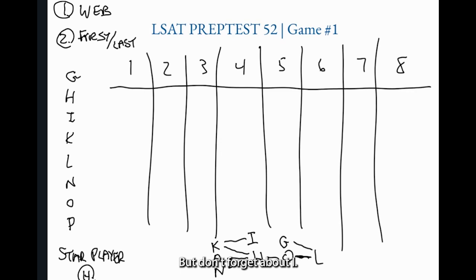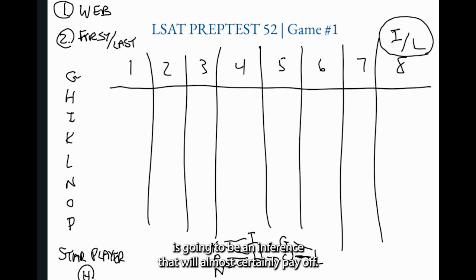Our web shows us that L could be there, but don't forget about I. I is free to float to the far right. And for that reason, either I or L could be in spot number eight. They are the only ones who can. That kind of restriction is going to be an inference that will almost certainly pay off. And we're going to see it pay off in multiple questions when we go over the questions for this game.